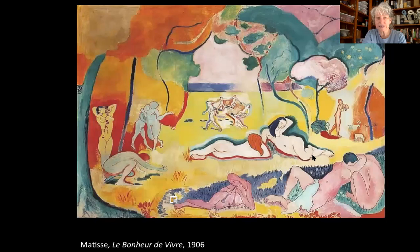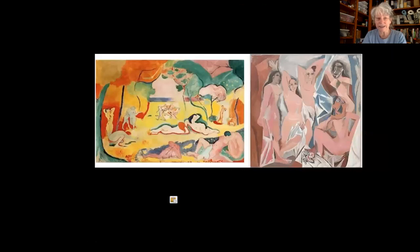Picasso had seen Matisse's painting hanging in the living room of American collectors Gertrude and Leo Stein, and he thought, 'I've got to take this to the next level.' So instead of setting it in a mythical Arcadian past, he puts his women in a contemporary Spanish whorehouse. He's essentially saying: your mythical past is BS — this is what reality is. This is what contemporary painting should look like.